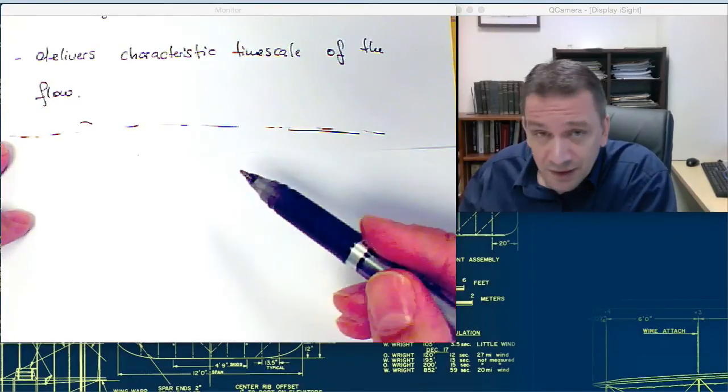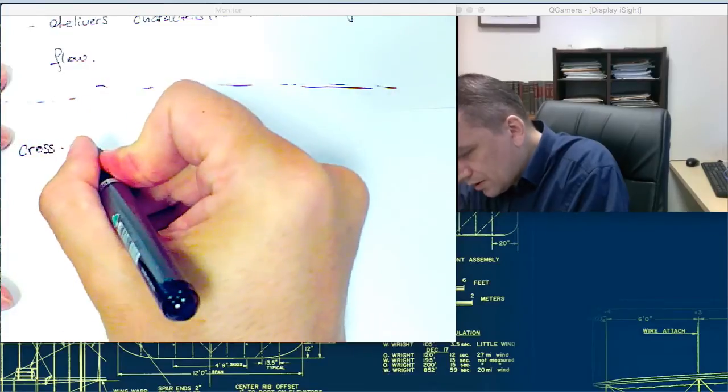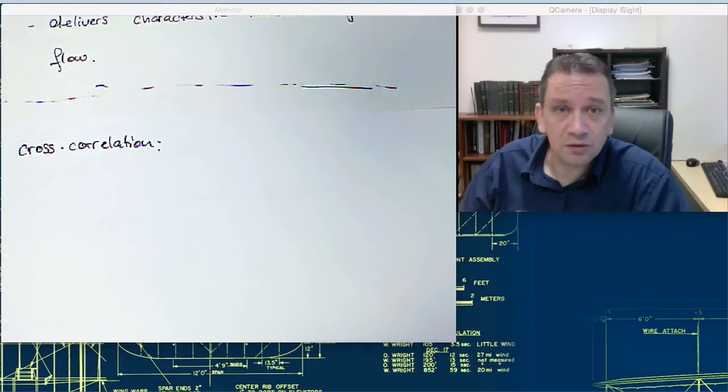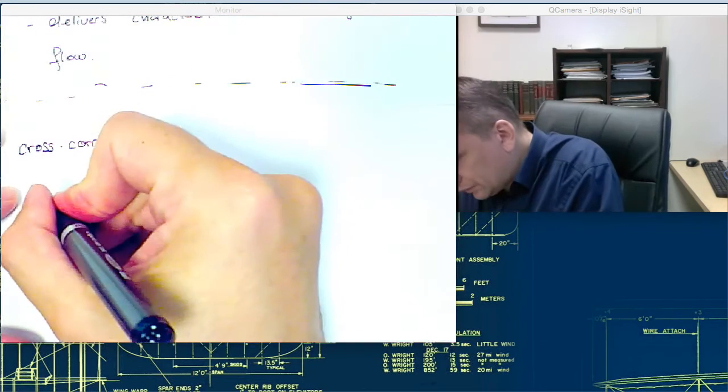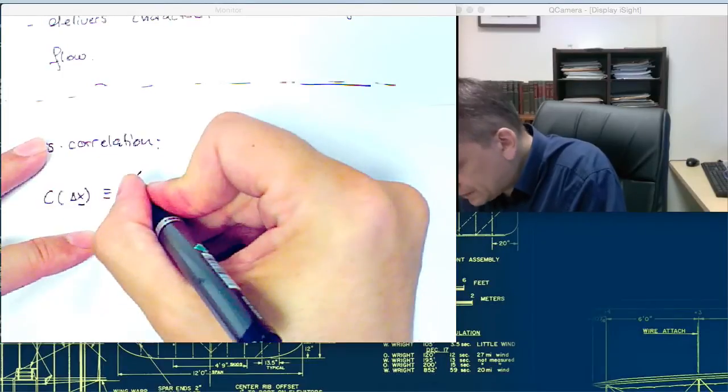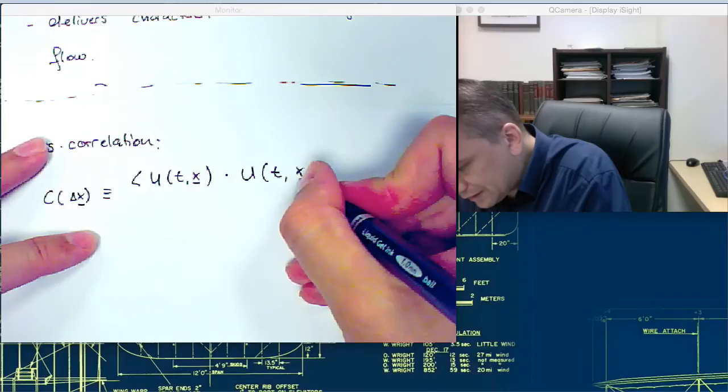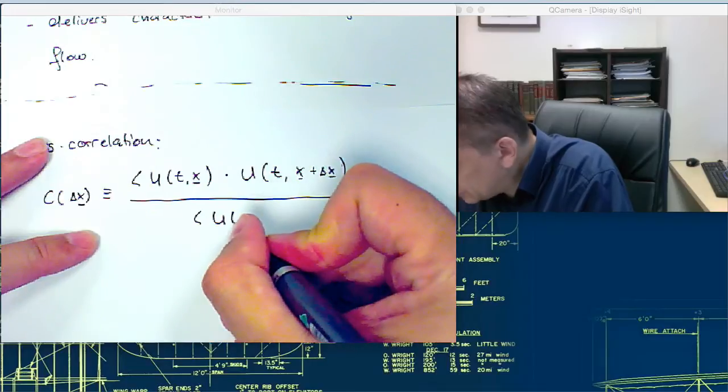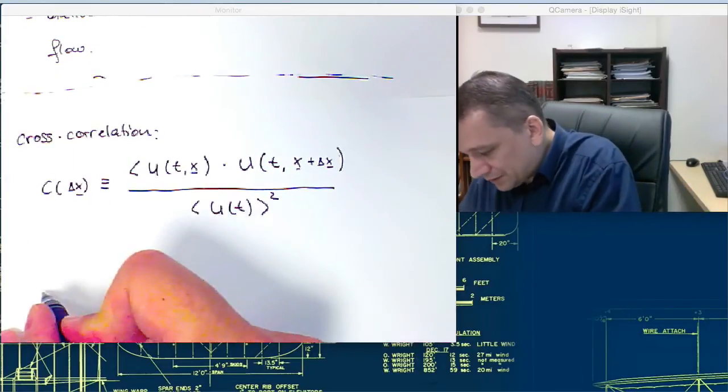Alright, so you have the integral time scale and you have the autocorrelation. So, now we want to introduce the cross-correlation. And where the autocorrelation is comparing the signal with itself in time, the cross-correlation is comparing two signals that are related in space. So, we call it here c of Δx. For example, it's defined as <u(t,x) · u(t,x+Δx)> over <u(t)²>.